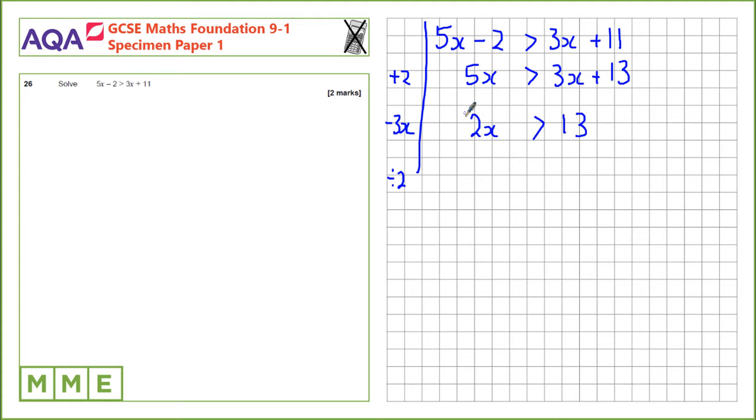Now, let's divide by this 2 to leave us with x. 2x divided by 2 is x. And 13 divided by 2 is 6.5. For solution, x is greater than 6.5.